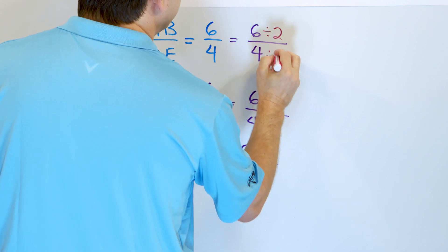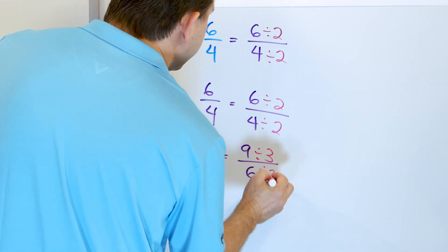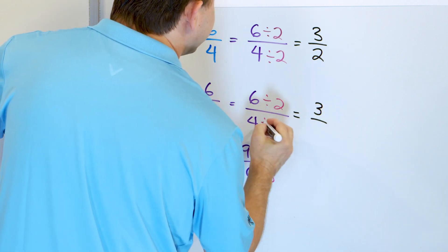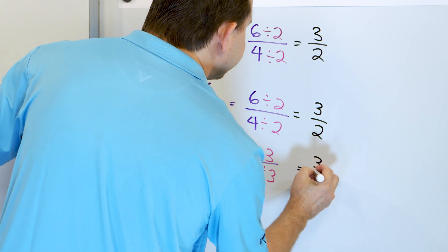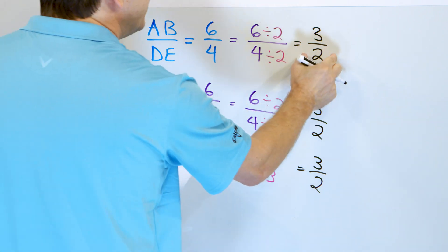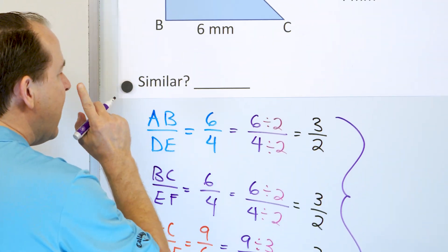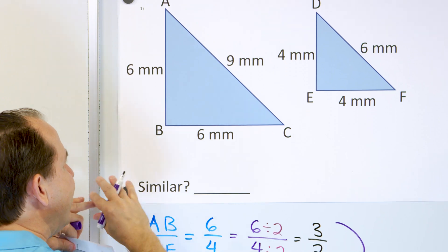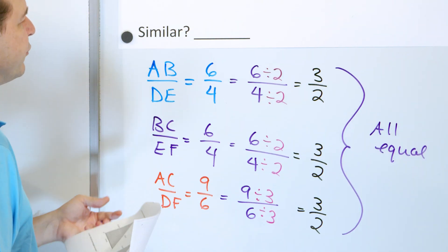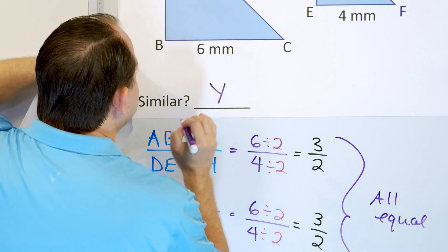We divide 6/4 by 2 to get 3/2. We do the same for the second 6/4 to get 3/2. For 9/6, we divide both by 3: 9 divided by 3 is 3, and 6 divided by 3 is 2, giving us 3/2 as well. Even though they looked different, they're actually the same exact ratio. Because all three ratios are equal, these triangles are similar.